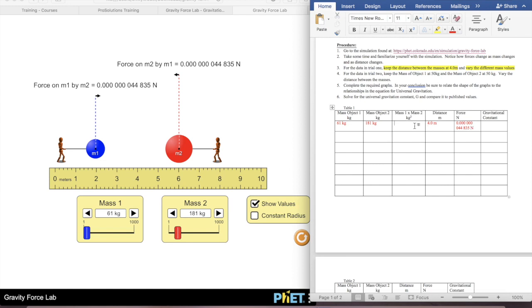And then I can figure this out. I can do 61 times 181. I'm just going to get a huge number and that's okay.